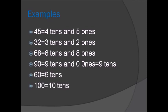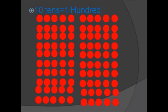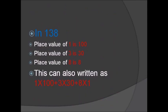Ten tens equals one hundred. In one thirty-eight, the place value of one is hundred. The place value of three is thirty. The place value of eight is eight.